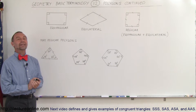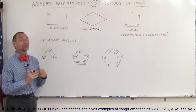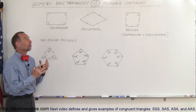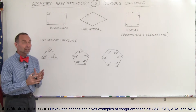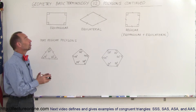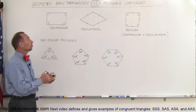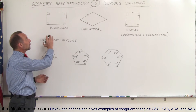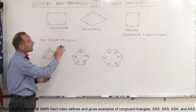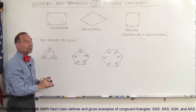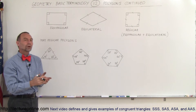Welcome to ElectronLine, and here we're going to continue with some more information about polygons. We have different kinds of polygons — we can call them equiangular, equilateral, and regular.